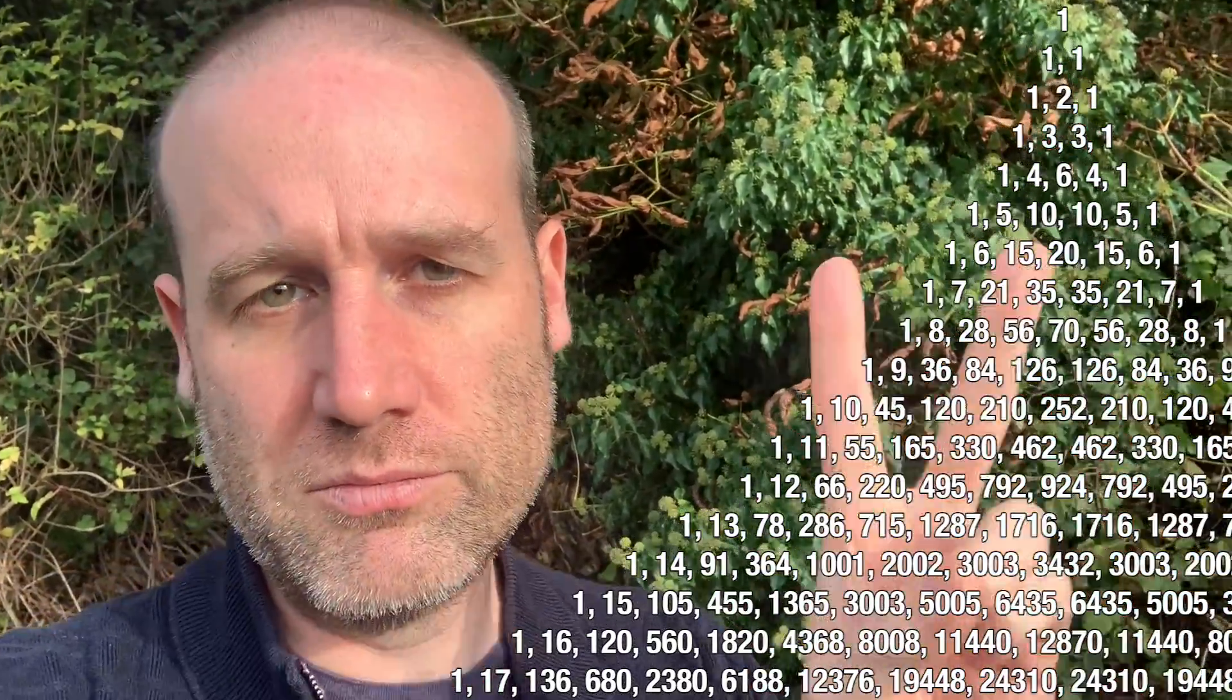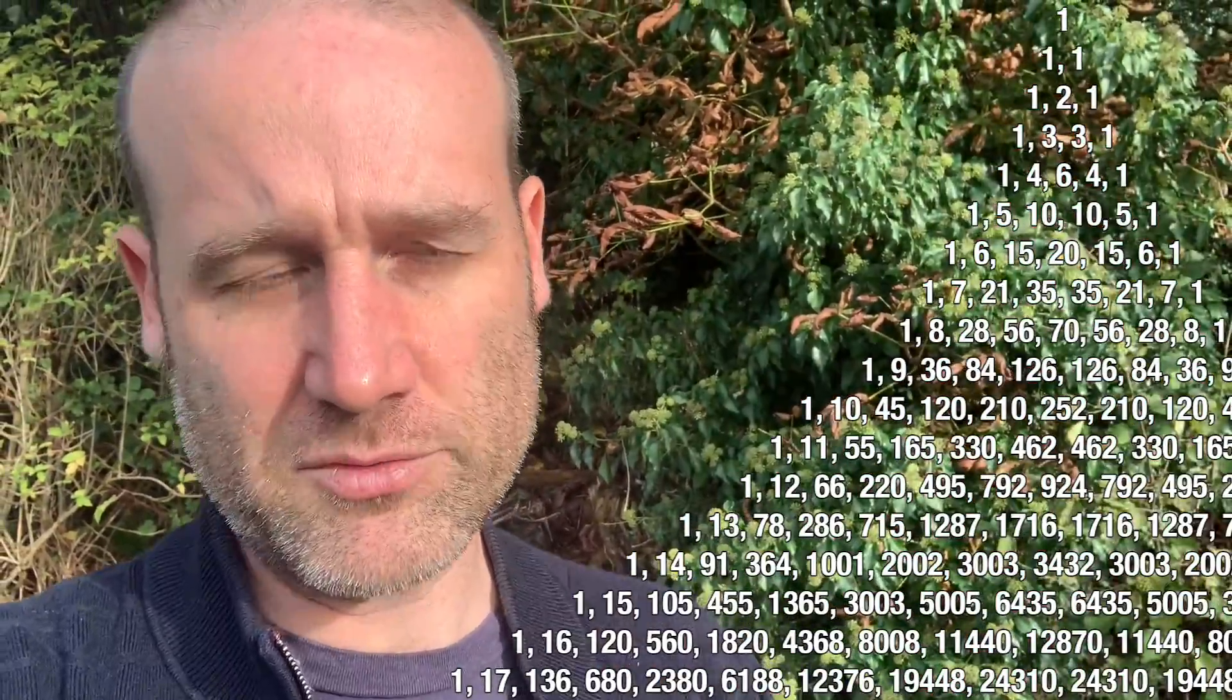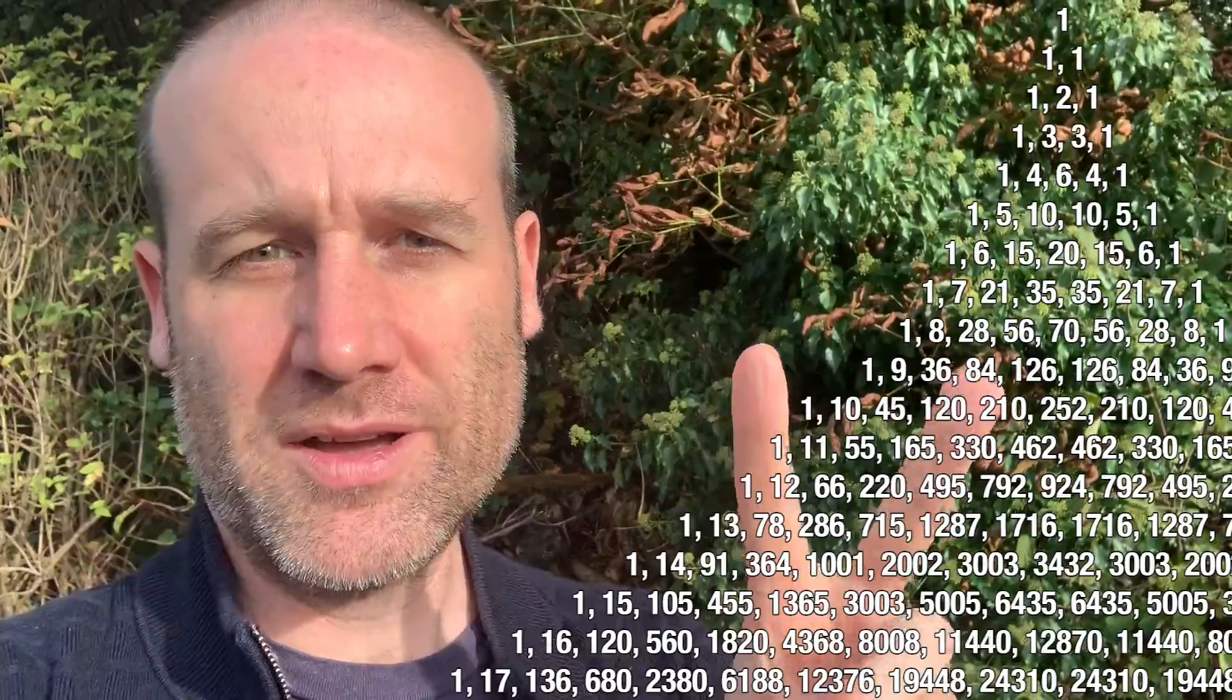78th, and 3003rd rows. That's the row number if you start counting from zero for the first row. Confusing. And there are two in each of those rows. So four rows, twice each, eight of them. That's it. That's the one we know of.